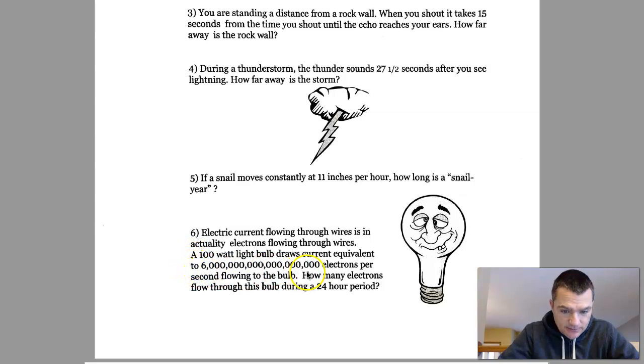How many electrons flow through this bulb in a 24-hour period? That's a big number. That's going to be a lot of zeros.